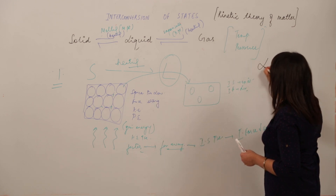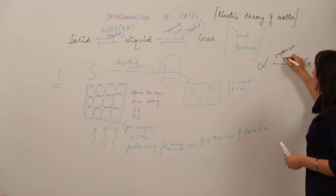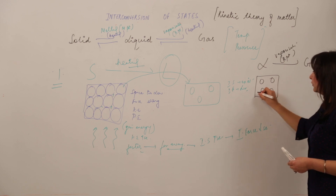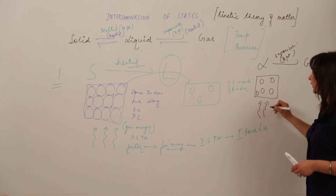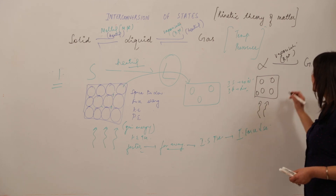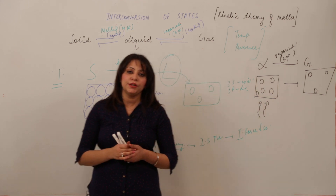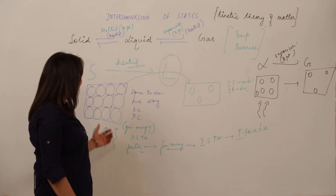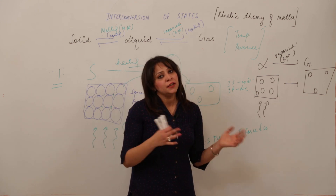Similarly, when liquid is converted into gas, the phenomenon is called vaporization, corresponding to the boiling point temperature. In liquid, particles are a little farther from each other with less force. When we heat the liquid, the particles gain energy, kinetic energy increases, they move farther apart, space increases, force decreases, and they get converted into gas. On the basis of kinetic theory, we explain how states convert by showing changes in energy, motion, space, and force.